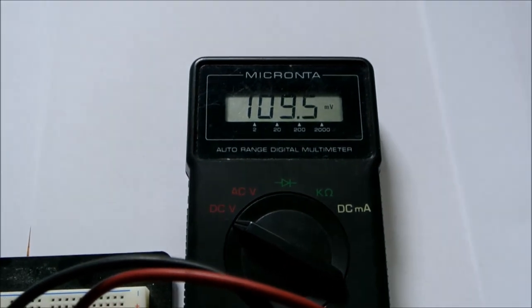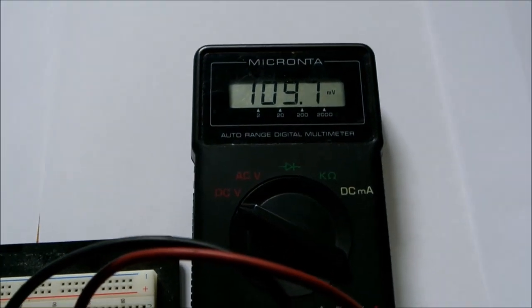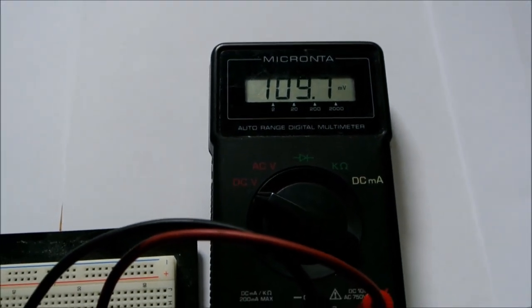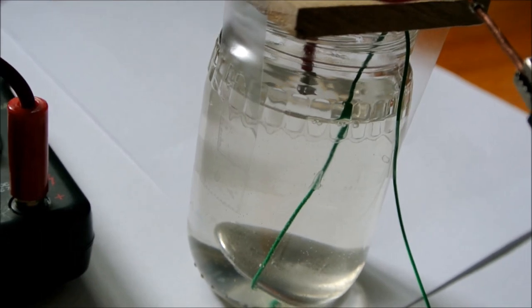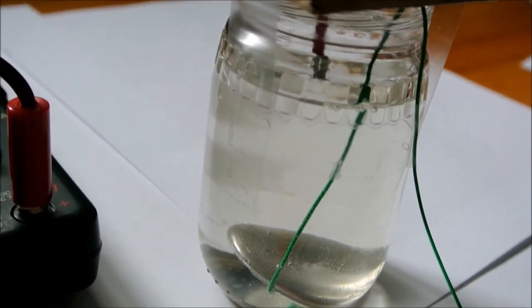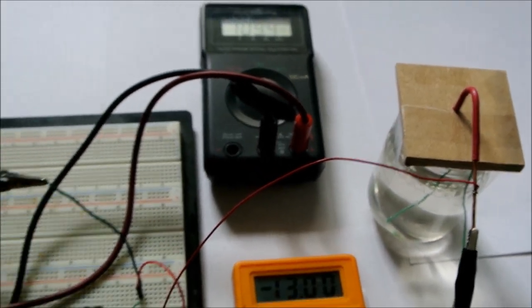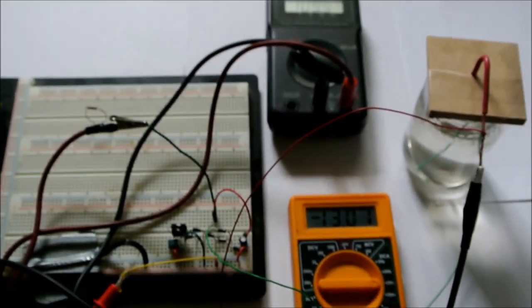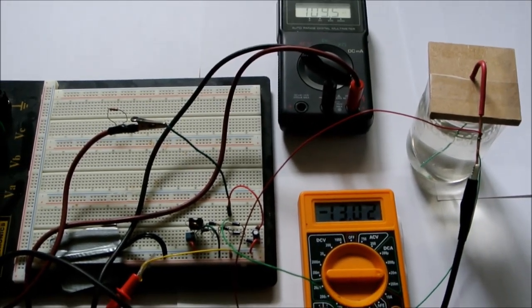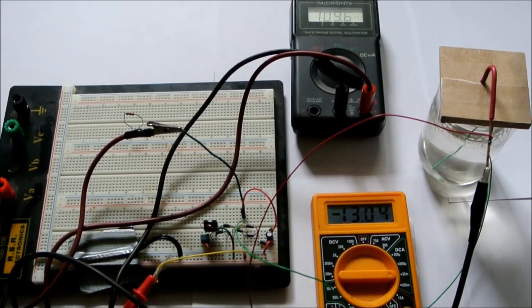This other multimeter is measuring voltage. It's pretty low under load, which is also fine. As long as tin is depositing, that's all good. And there is the crystal growing electrolyte bath. I will leave it for a few weeks, checking to make sure the current and voltage stay low, and it should grow a crystal.